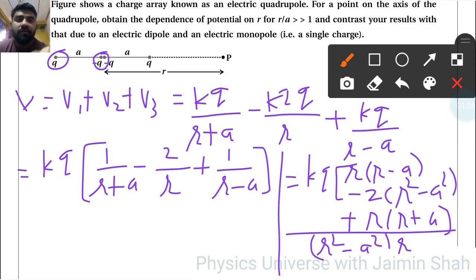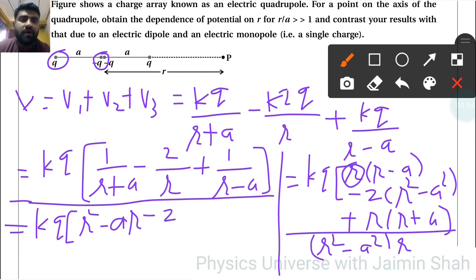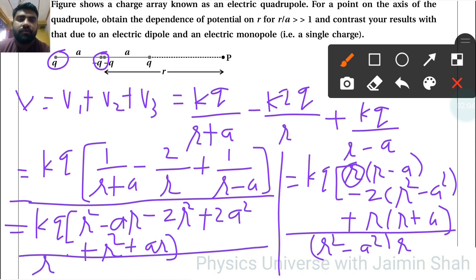I am writing this solution here in this box. Equal to KQ, now R we have to multiply inside, so R square minus RA minus 2R square, so R square minus A square, plus R square plus RA upon R into R square minus A square.